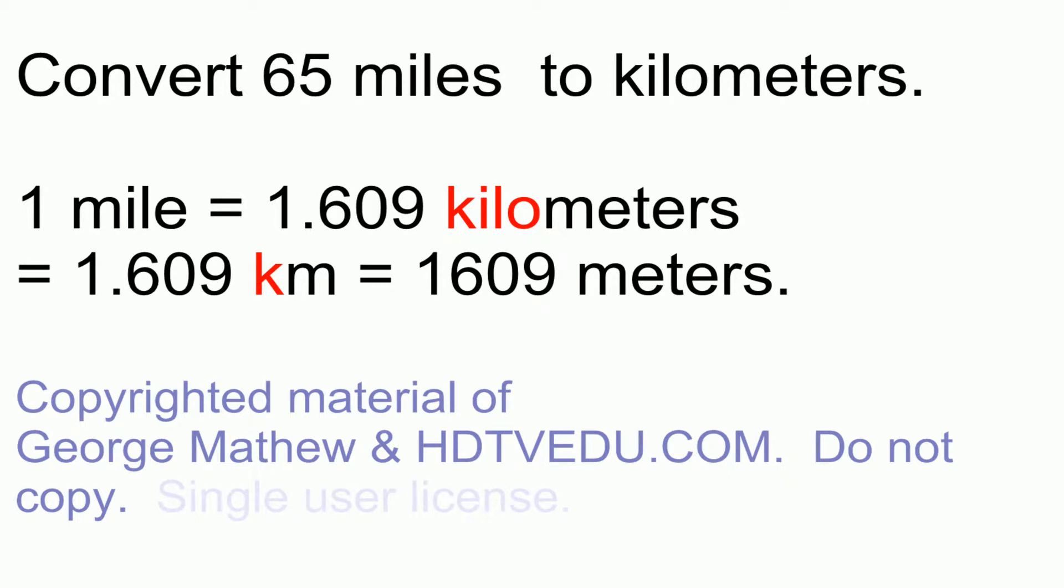Convert 65 miles to kilometers. One mile is equal to 1.609 kilometers, and 1.609 kilometers is equal to 1609 meters. Don't forget what kilo stands for - kilo means 1000, so 1.609 multiplied by a thousand equals 1609 meters. That is the reason I chose 1.609 as opposed to just 1.6.